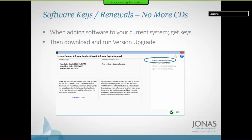This is a relatively new function, added in version 12.4. Previously, purchasing a new module required Jonas to send a CD, kick everyone off the system, install the CD, and rebuild. Now you can do it completely online. Under system administration, click Software Key Renewals, then Get Current Product Keys — it goes to the Jonas website and pulls down your list of allowed modules. Then download the version upgrade (not the update). You still need everyone out of the system, but when you run it, it'll add that module into your system.